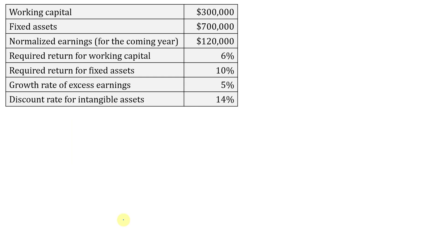Let's look at a sample calculation. We have working capital of 300,000 and fixed assets of 700,000, where we use fair values where available. Normalized earnings for the coming year are 120,000. The required return for working capital is 6%, for fixed assets is 10%, the growth rate of excess earnings is 5%, and the discount rate for intangible assets is 14%.